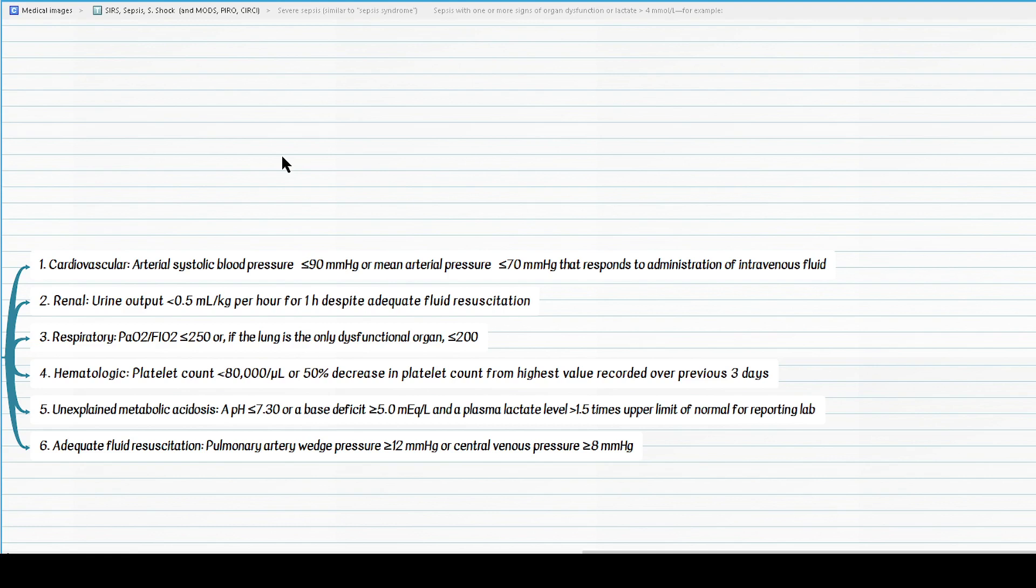If a patient meets the criteria of sepsis and his or her platelet count is less than 80,000 per microliter, what is the definition? This patient again has evidence of organ failure, therefore he is in severe sepsis at least.